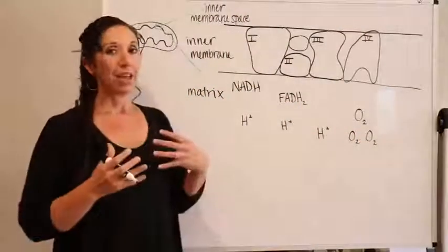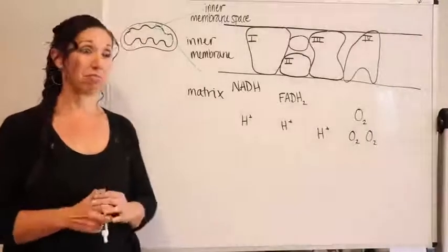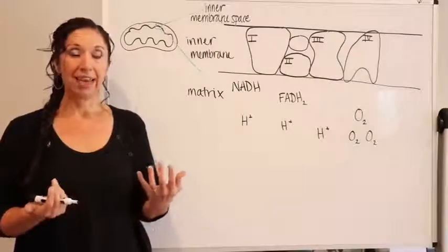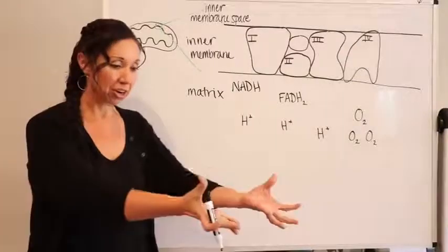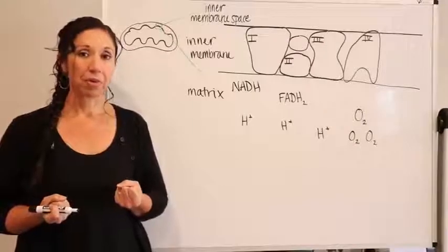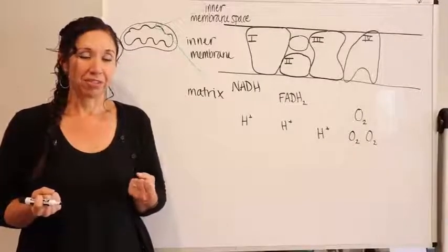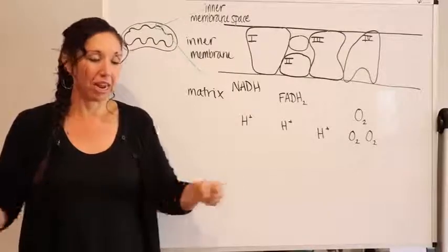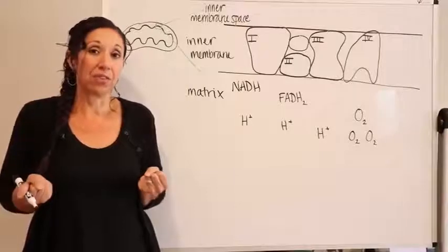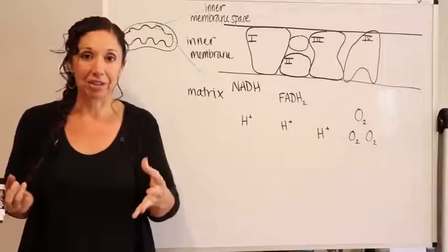Hanging out in the matrix you also have tons of protons, because all those protons made during the citric acid cycle and glycolysis get shuttled into the matrix. The other thing hanging out in the matrix — which we haven't talked about yet — is oxygen. So now oxygen finally comes into play. There's lots of O2 just hanging out in the matrix.